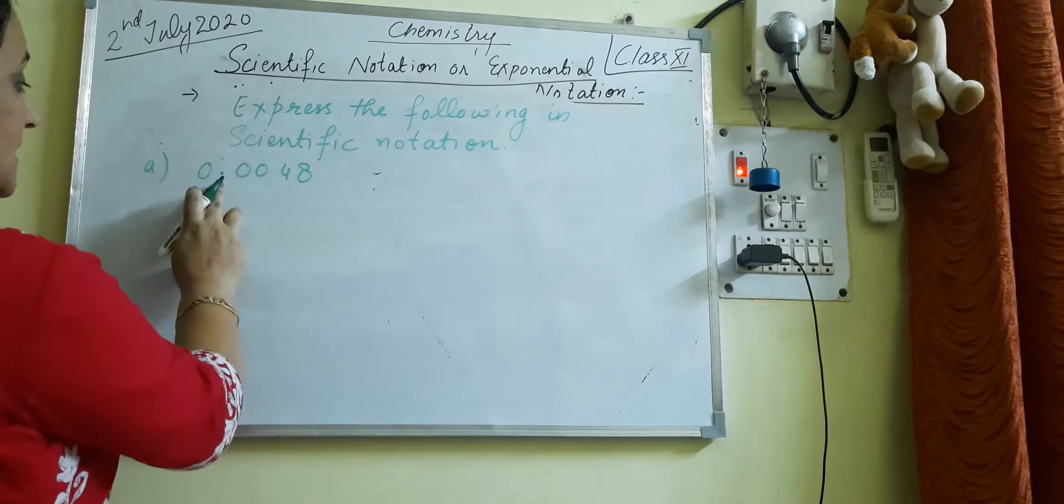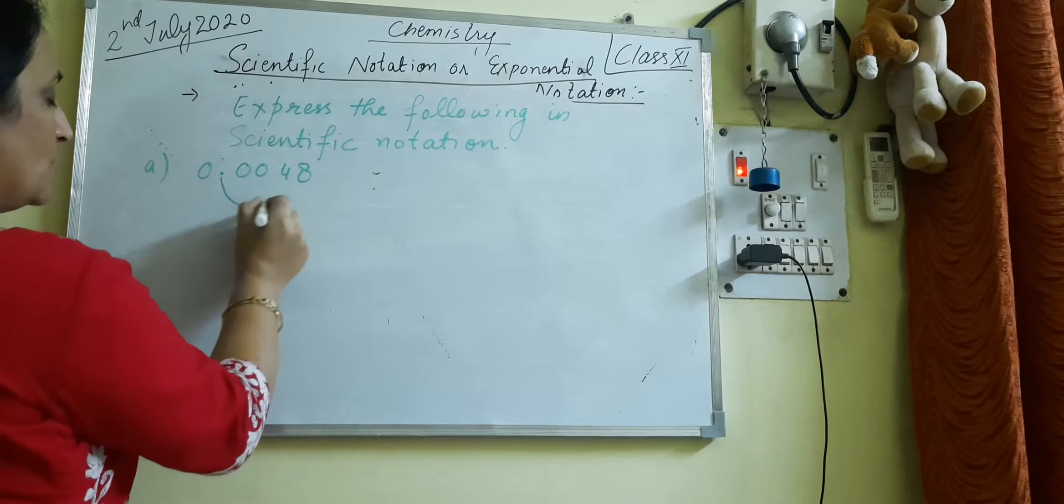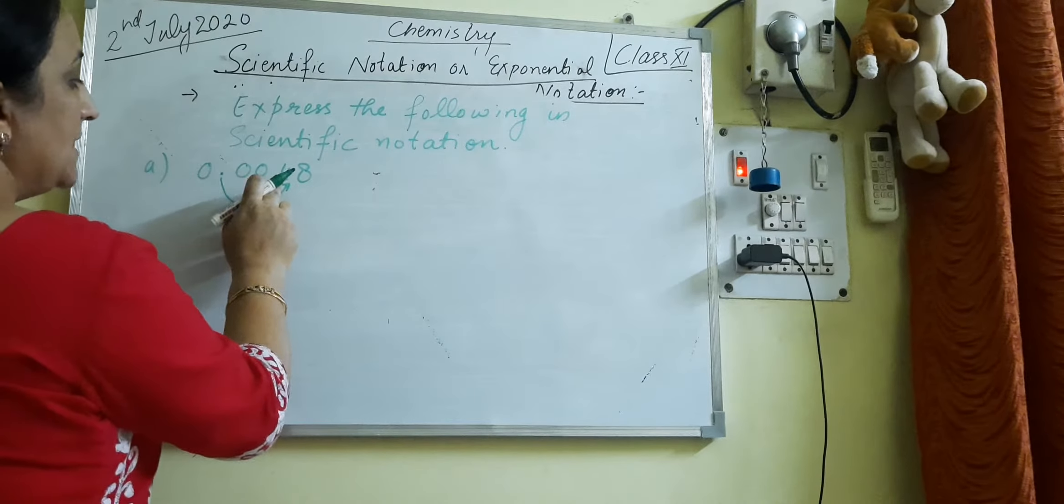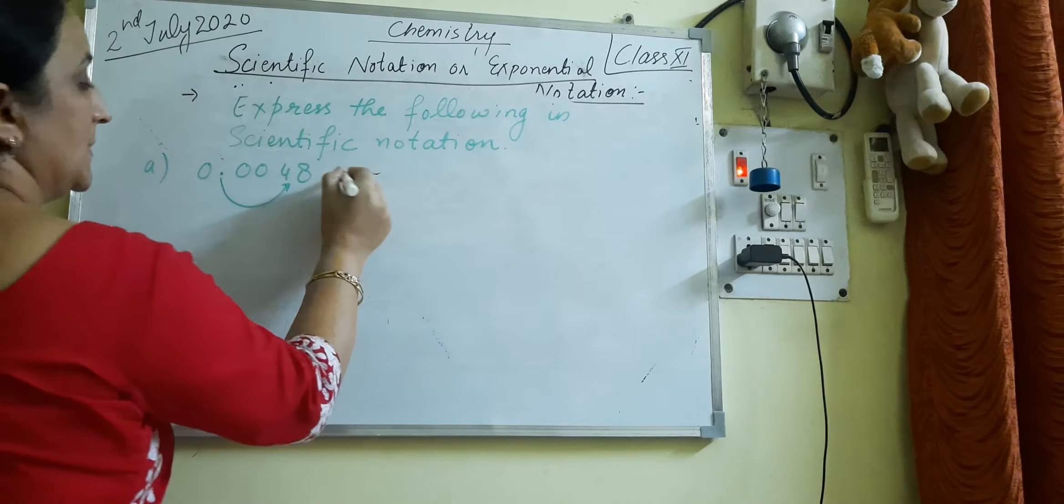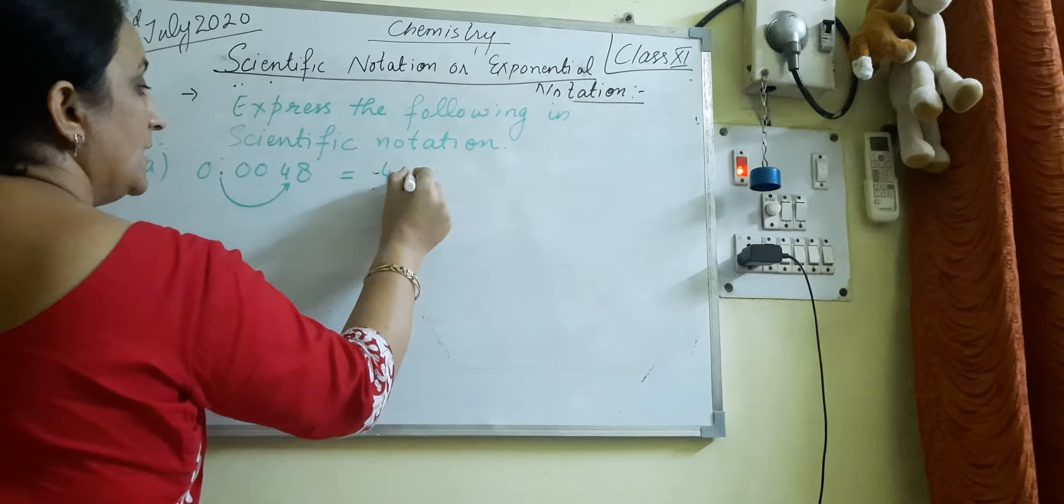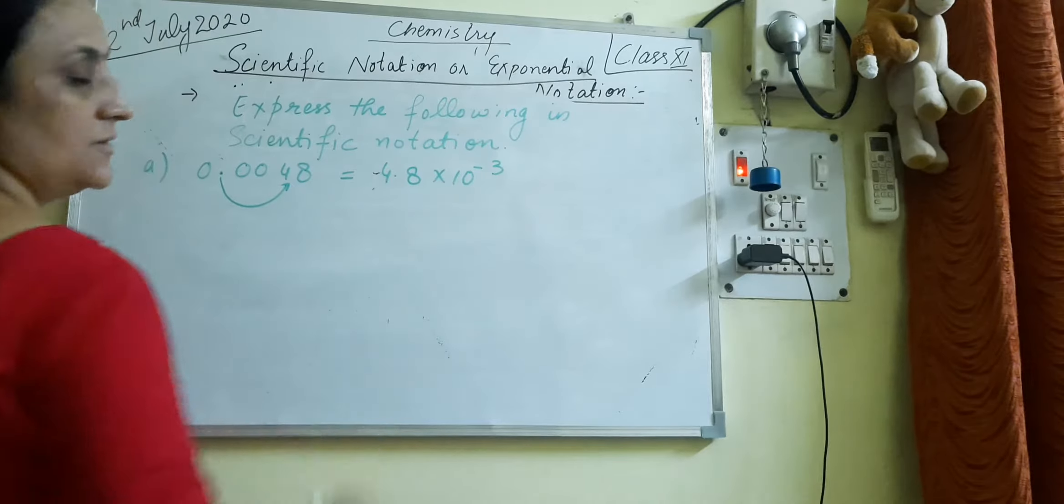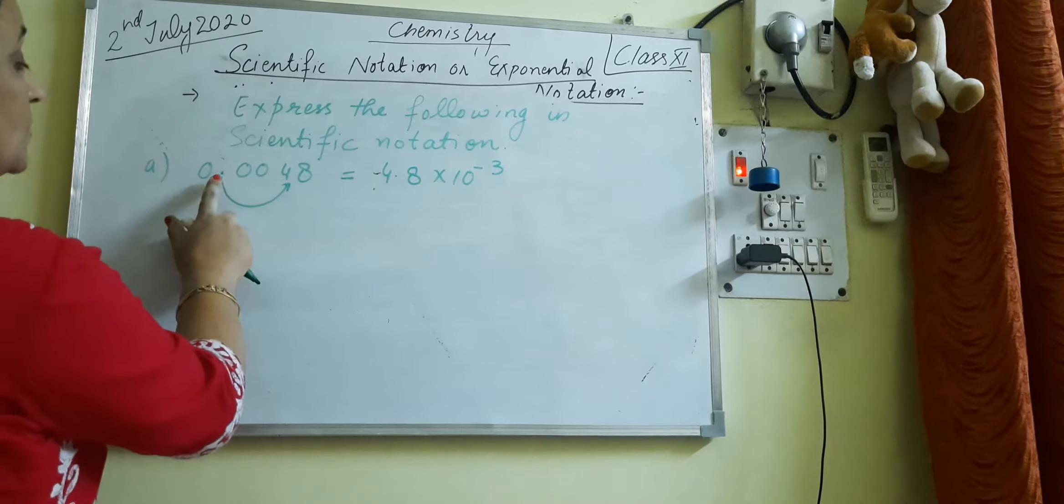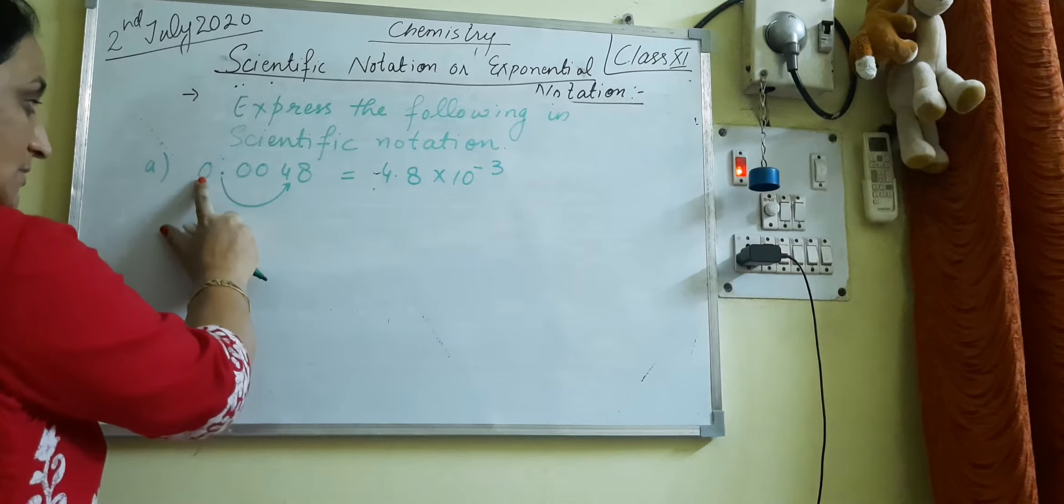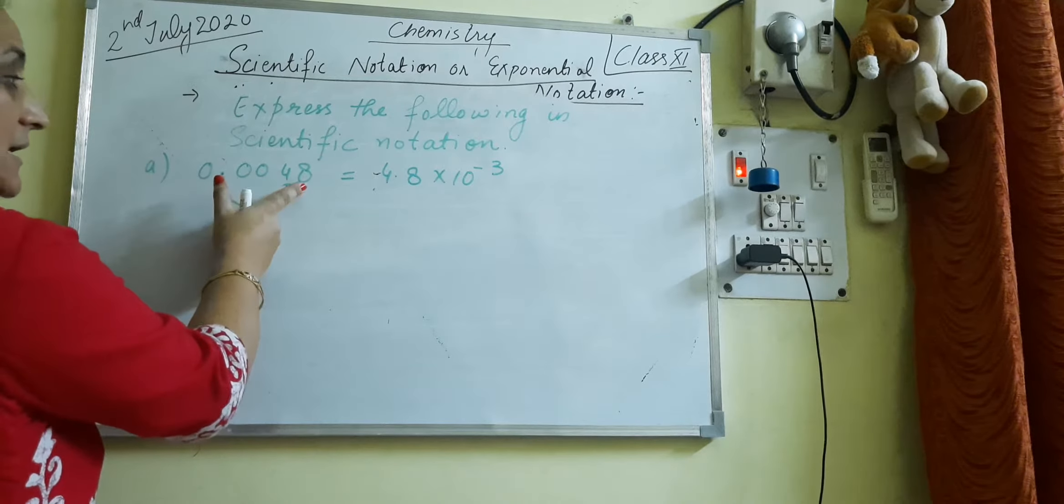First question is 0.0048. So now how do we represent this number in scientific notation? You can see here the decimal moves toward the right side. How many places? 1, 2, 3. Three places. So this becomes 4.8 into 10 raised to power minus 3.